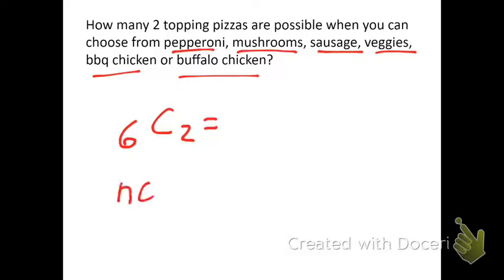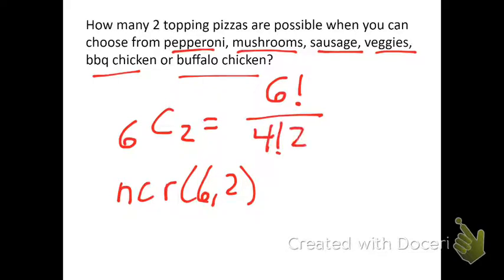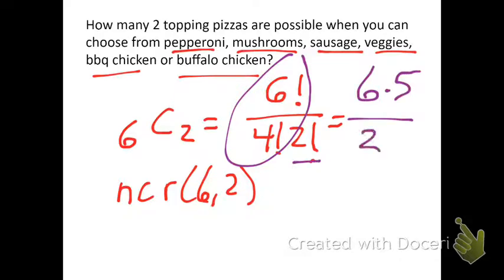And you could type that into the calculator as NCR 6, 2, but this one you can actually do by hand because the numbers are small. So it would be 6 factorial over 6 minus 2, which is 4 factorial, times R, which is 2 factorial. This part here would simplify to 6 times 5, and then that is just 2 times 1. So there's 15 different two-topping pizzas you can make if you have 6 toppings to choose from.